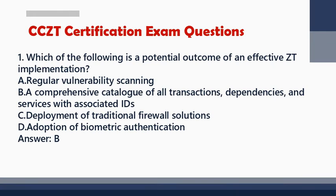Question 1: Which of the following is a potential outcome of an effective ZT implementation? A. Regular Vulnerability Scanning. B. A Comprehensive Catalog of All Transactions, Dependencies, and Services with Associated IDs. C. Deployment of Traditional Firewall Solutions. D. Adoption of Biometric Authentication. Answer: B.